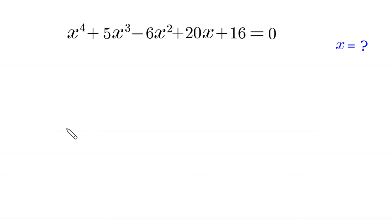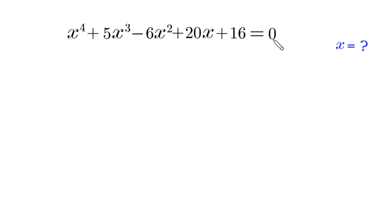Hello everyone, you are welcome. We need to solve the algebra equation x to the power 4 plus 5x cubed minus 6x squared plus 20x plus 16 is equal to 0. We need to find all possible values of x.